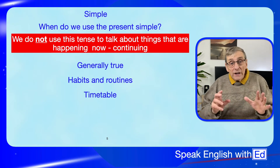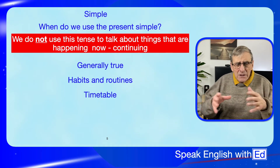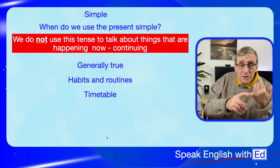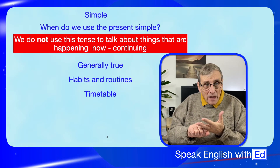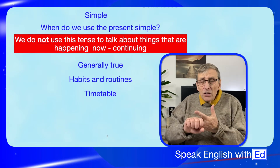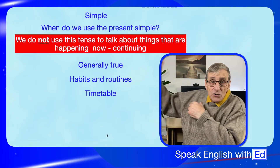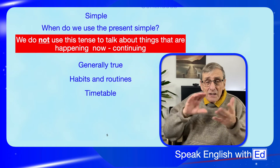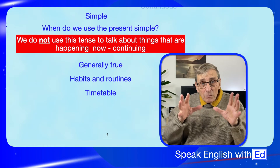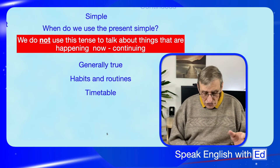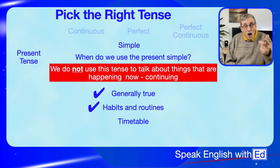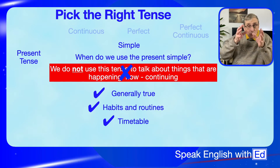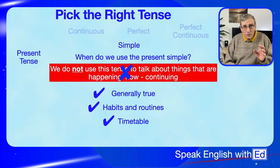We also use the present simple when we're talking about a timetable. Lots of things have timetables. You catch the 8:45 to college, the 9:35 train to Edinburgh, the 3:45 flight to Dubai — these all have a timetable and they all use the present simple tense. So to summarise: we use the present simple for things that are generally true, for habits and routines, and for timetables. We do not use it when talking about things we are doing right now, this very minute.